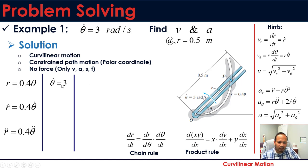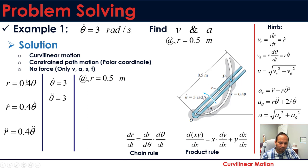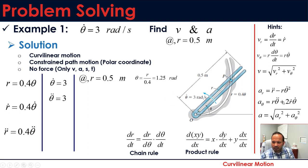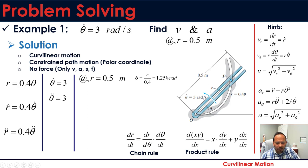Theta_dot is given as 3 rad/s (a constant), so theta_double_dot is the derivative of a constant, which equals 0. Therefore r_double_dot = 0.4 times 0 = 0. To find velocity and acceleration when r = 0.5, we also need theta. From r = 0.4 theta, when r = 0.5: theta = 0.5 / 0.4 = 1.25 radians.